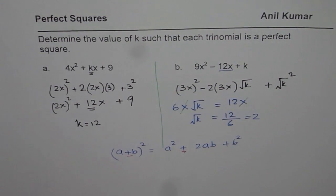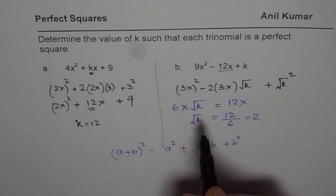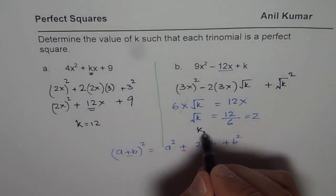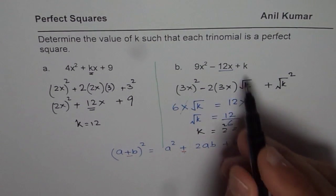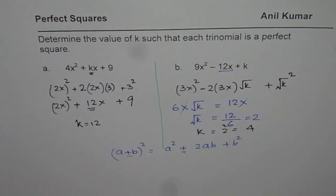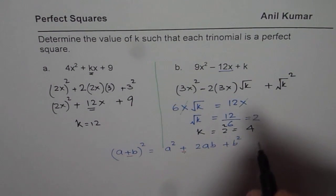So which is 2. And that clearly gives you the value of k, which is the square of 2. So k will be 2² or 4. So in this particular case, we get k as 4.